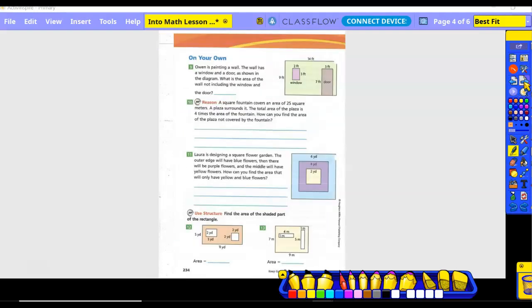On your own, number 9. Owen is painting a wall. The wall has a window and a door as shown in the diagram. What is the area of the wall not including the window or the door? Once again, they gave us a picture. So our dimensions are there. If you need extra notebook paper, that would be a good choice. So first, what is our formula for all these?